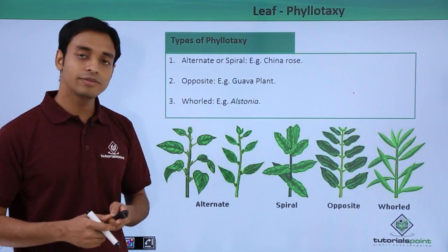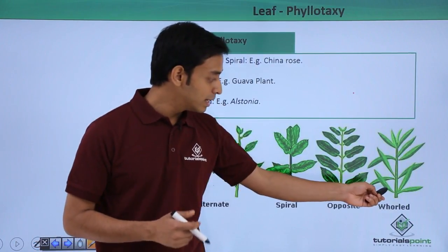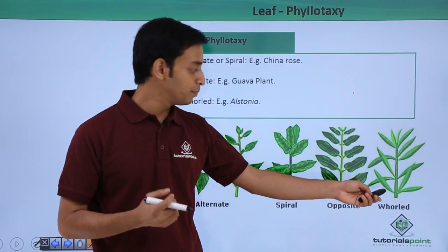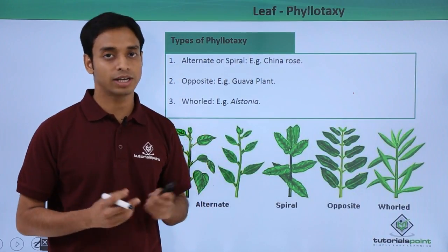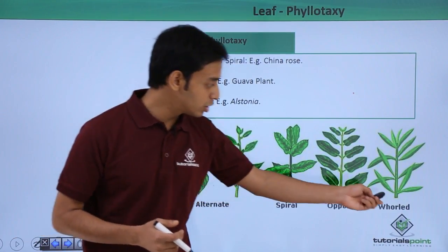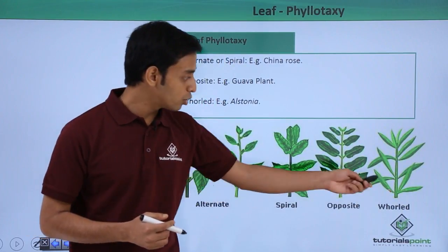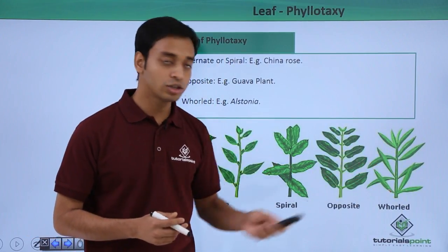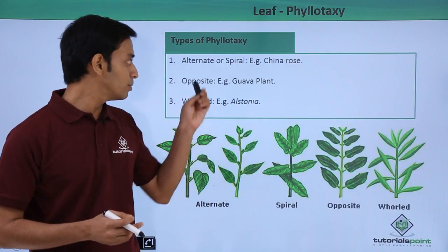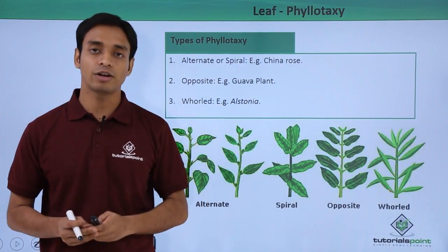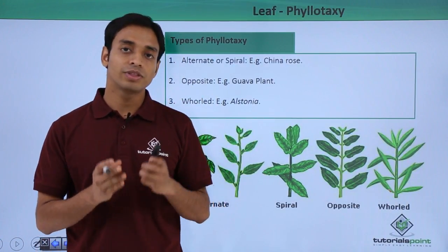The third type is known as whorled phyllotaxy, mostly found in Alstonia. This is a characteristic feature where from a single node more than two leaves come out. As you can see here, from a single node three leaves have come out, and from all the other nodes also more than two leaves are forming.